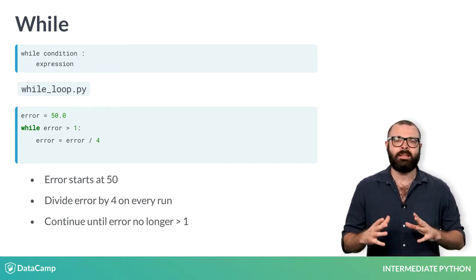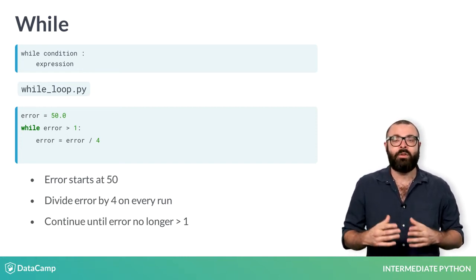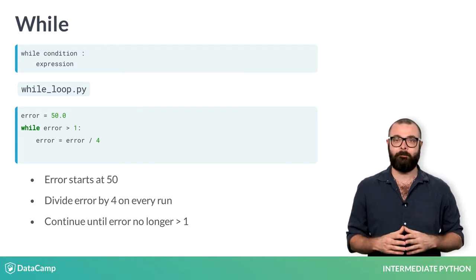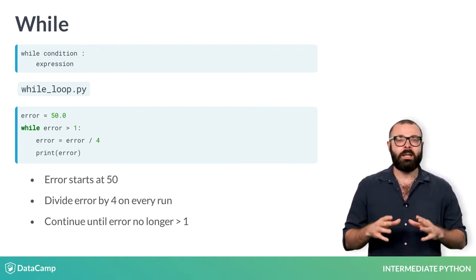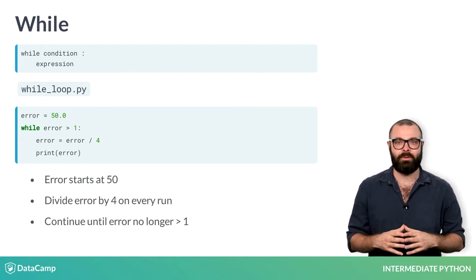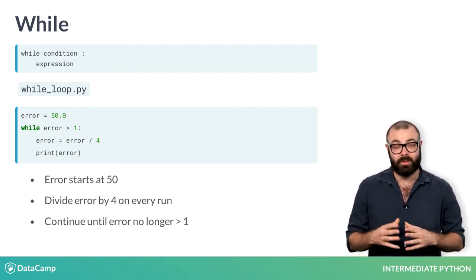This kind of simulates our fancy algorithm that divides the error by 4 on every run. Next, we also print this error. Let's go through what actually happens if you run this script step by step.